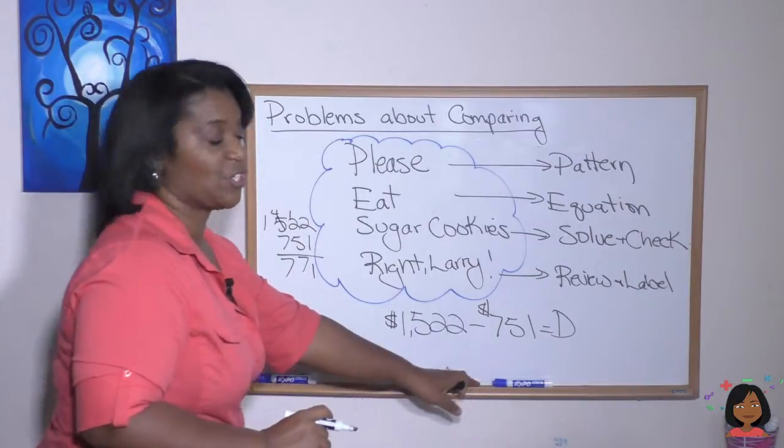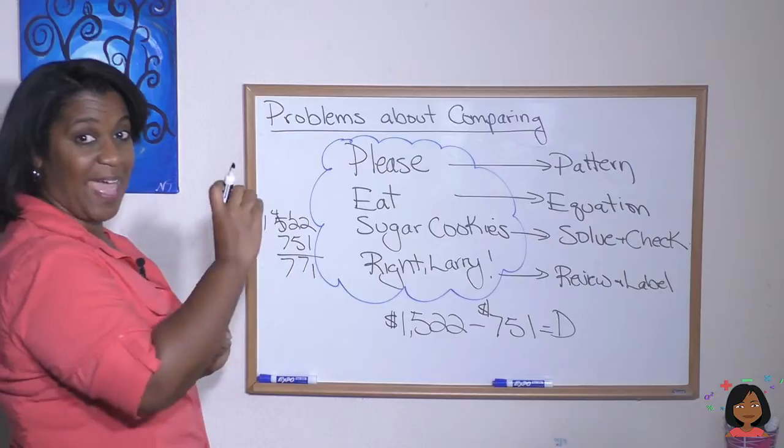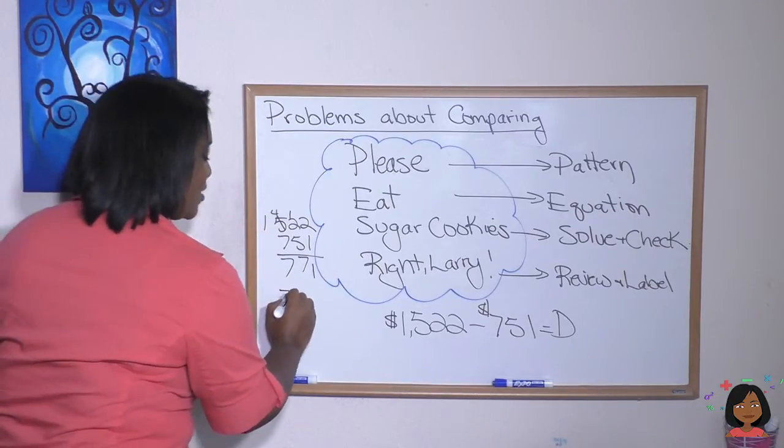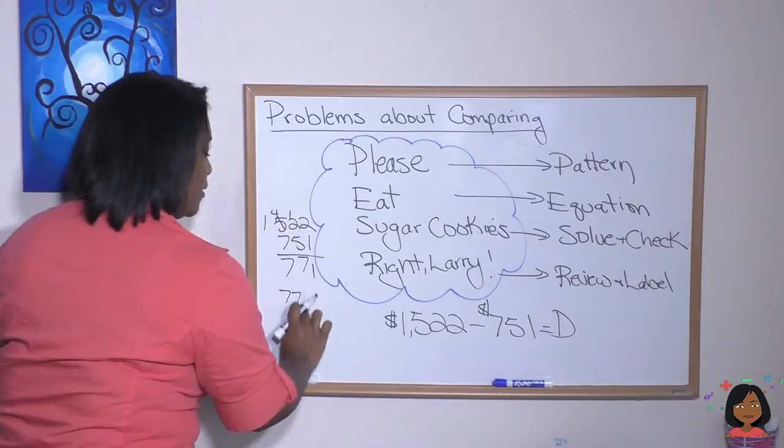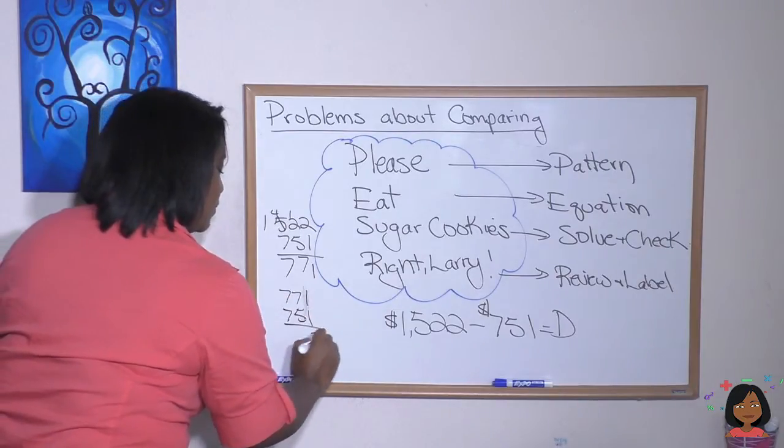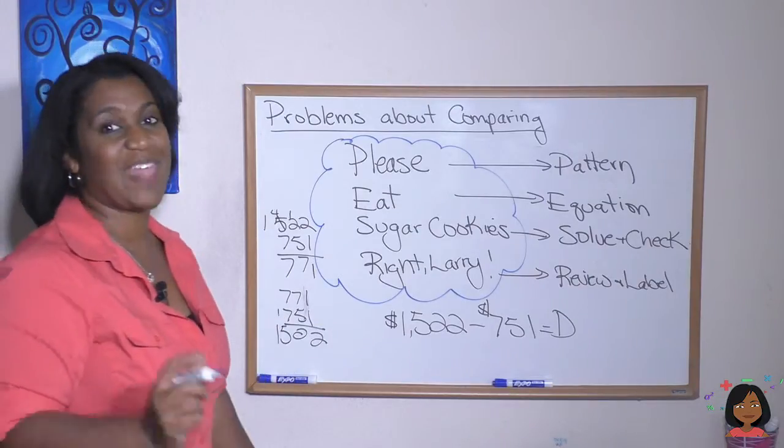Now we're going to check this by putting it back in to our equation and then we're going to add up. That's how we do it with subtraction. So we're going to take $771 and add it to $751. And we get $1,522. And that checks out.